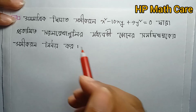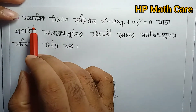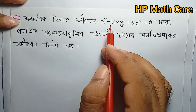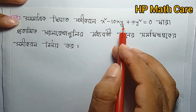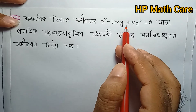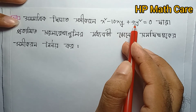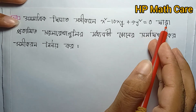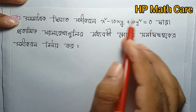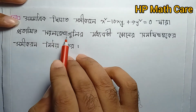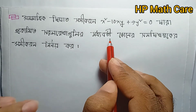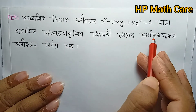Now let's look at the first question: x squared minus 10xy plus 9y squared equals zero. This is our next problem.